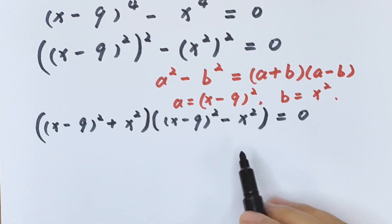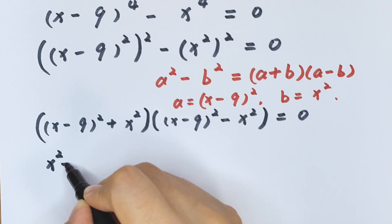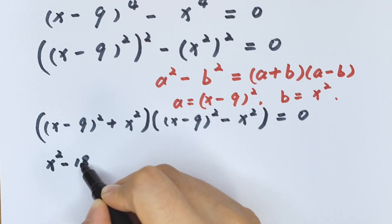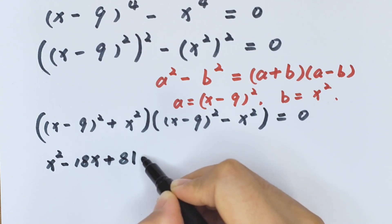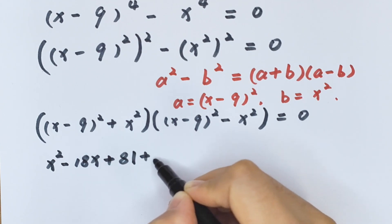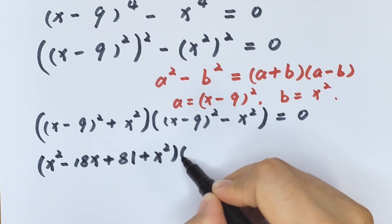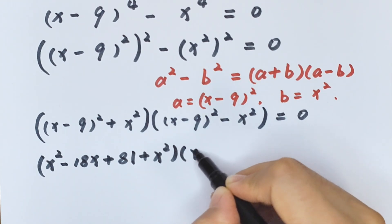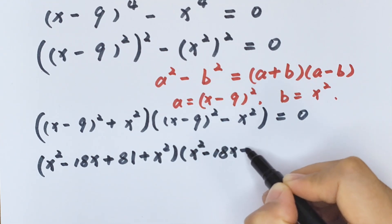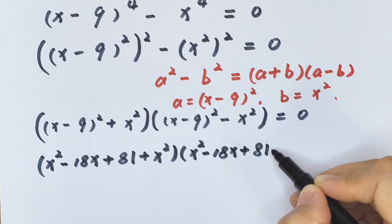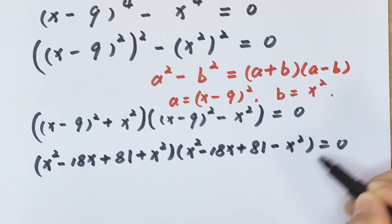Now we open the brackets. So we get (x squared minus 18x plus 81 plus x squared) times (x squared minus 18x plus 81 minus x squared) equals 0.